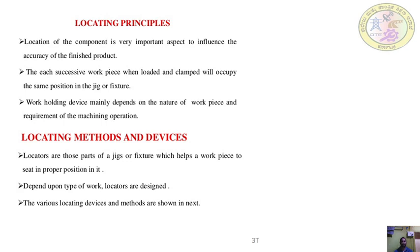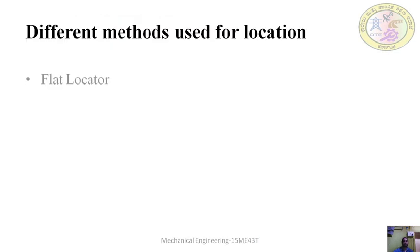Locating methods and devices: Locators are those parts of the jigs and fixtures which help keep a workpiece in a proper position for the coming operation. Locators are very importantly required — they are the basic part of the jigs and fixtures. Without locating devices, there will be no accuracy. Depending upon the type of work, locators are designed. The various locating devices are shown here.